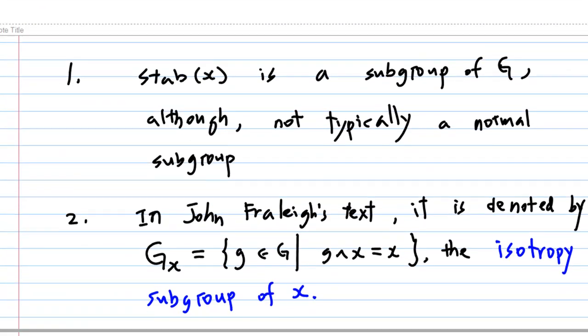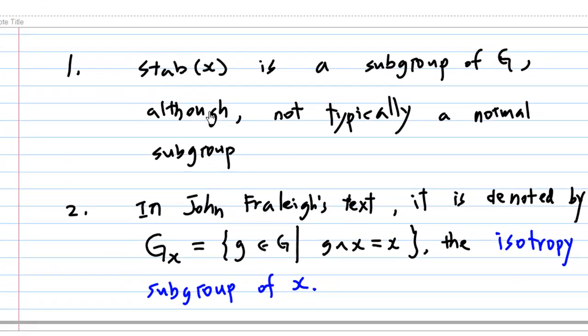A few points to note: the stabilizer of X is a subgroup of G, although not typically a normal subgroup. Second, in John Fraleigh's text, it is denoted by G sub X, and it is also called the isotropy subgroup of X.